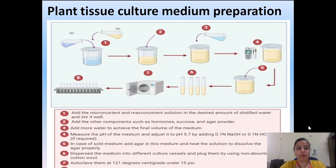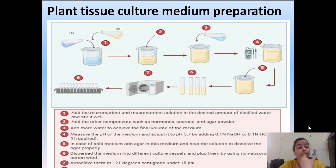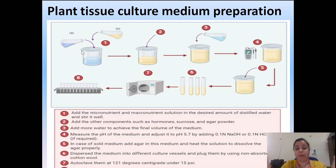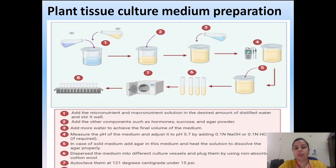Now the plant tissue culture medium is required because we are not growing the plant in soil. We need to provide in vitro nutrients that a plant normally gets from soil. In the first step, macronutrients and micronutrients are separately prepared in distilled water, stirred well, and then mixed.